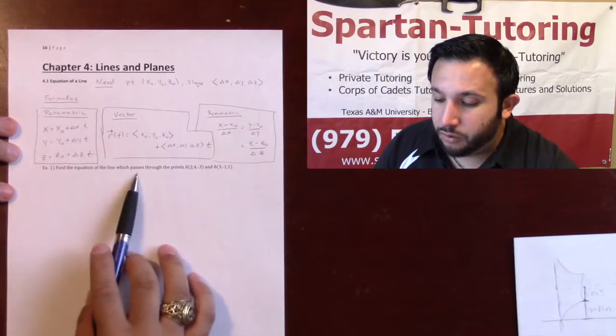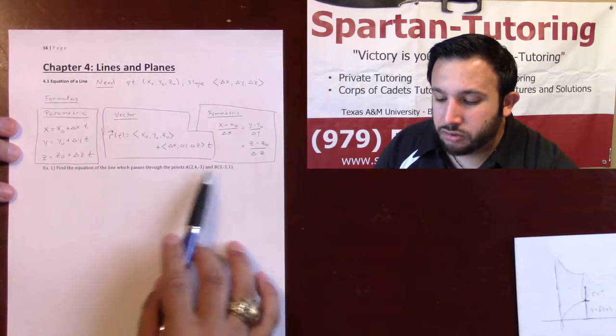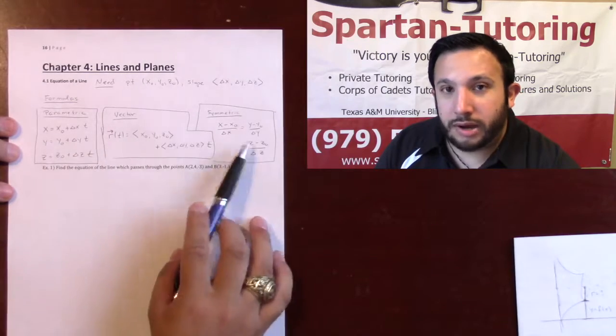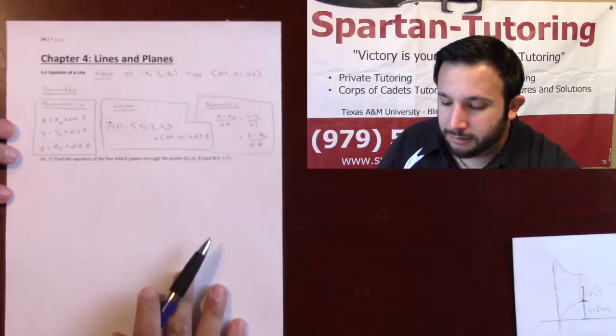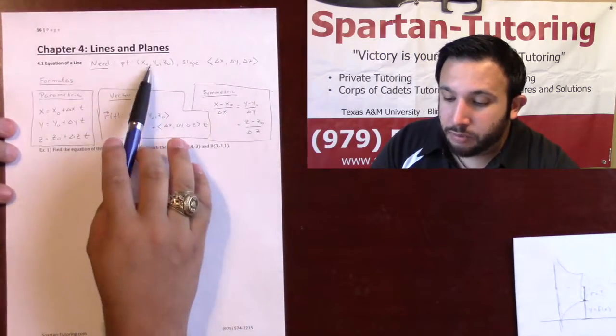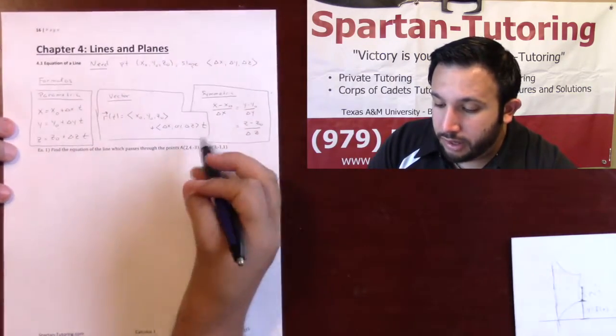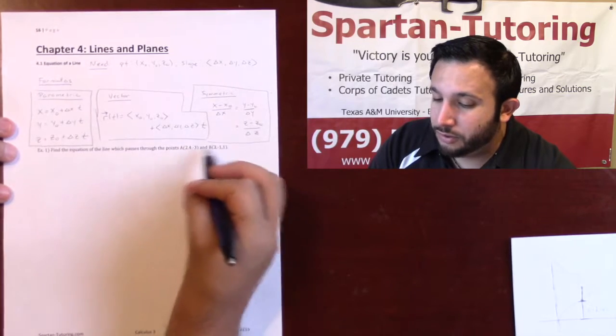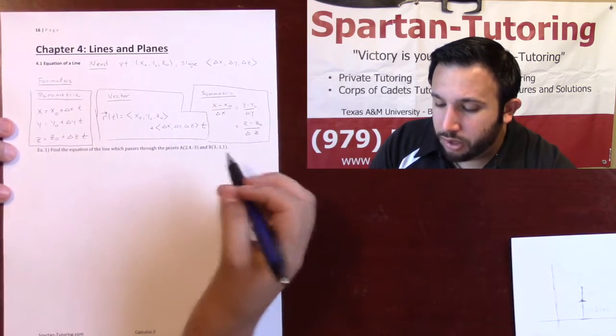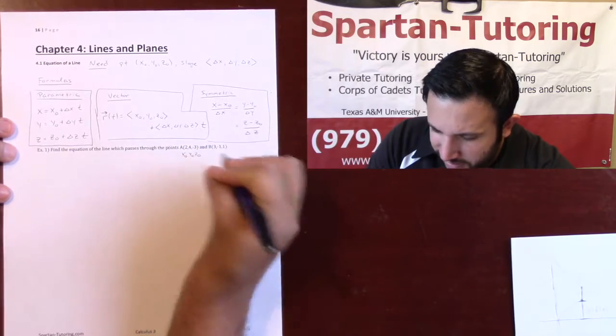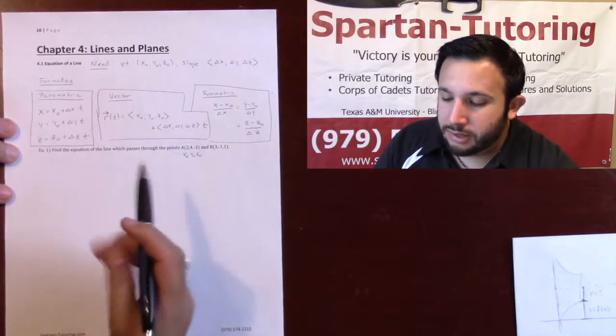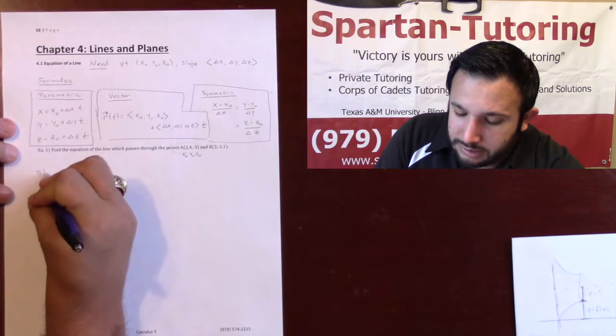So let's go ahead and find the equation of the line that passes through two points, and we'll write it in all three forms so you can see what a final answer would look like. Now, there are two things that I need: a point and a slope. I've already got two points. You can pick whichever point you want. I'm just going to go ahead and pick this as my x-naught, y-naught, z-naught. You could have picked this one, too. It doesn't make a difference. Let's find my slope.